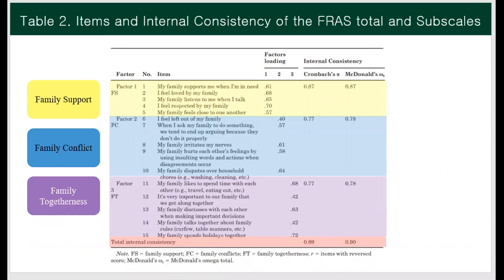The final 15-item family relationship assessment scale was developed. Exploratory factor analysis confirmed three factor structures: family support, family conflict, and family togetherness.